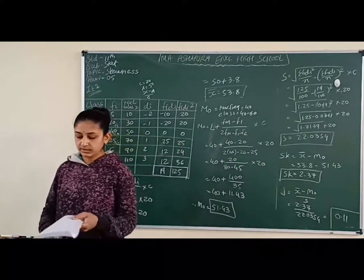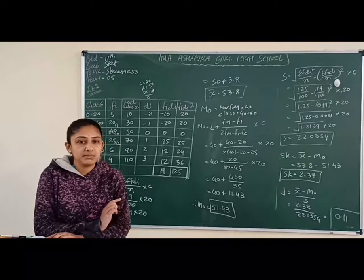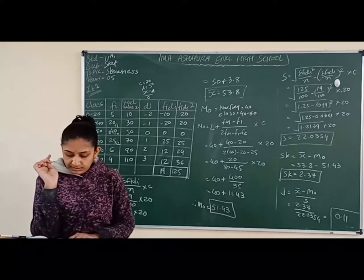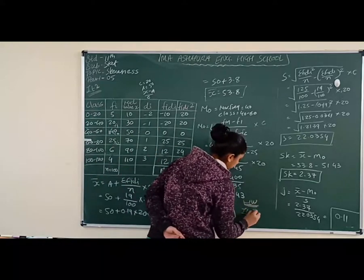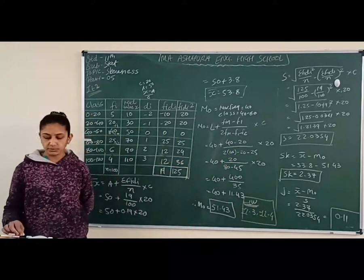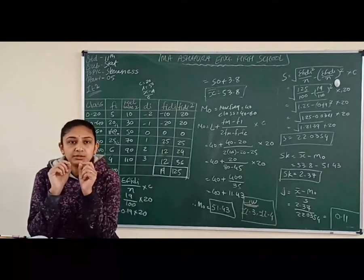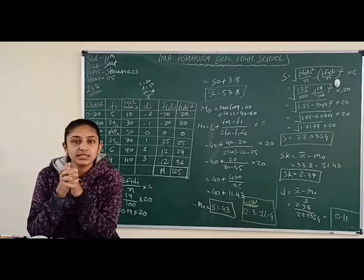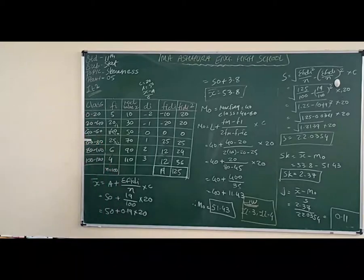So that was illustration number 2. When a continuous frequency distribution is given, we find mean and mode in this way, and then compute skewness and coefficient of skewness. For illustrations 3 and 4, you need to solve them in your notebook using the same method. In the next video, we will learn illustration number 5. Thank you very much.